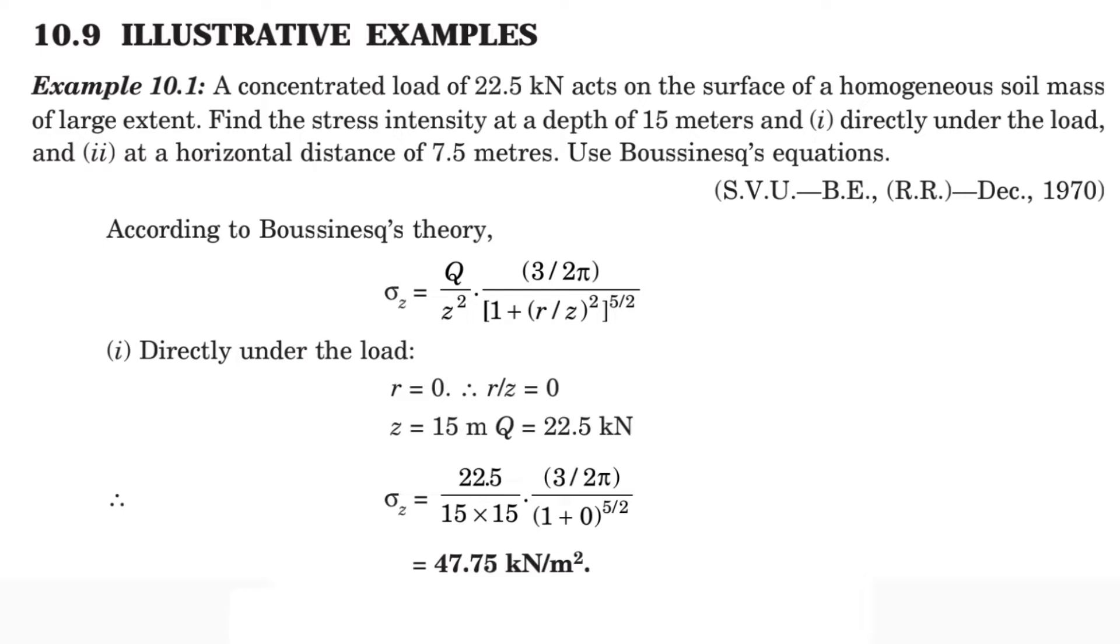The question is: a concentrated load of 22.5 kN acts on the surface of a homogeneous soil mass of large extent. Find the stress intensity at a depth of 15 meters, first directly under the load, and second at a horizontal distance of 7.5 meters. Use Boussinesq's equation.